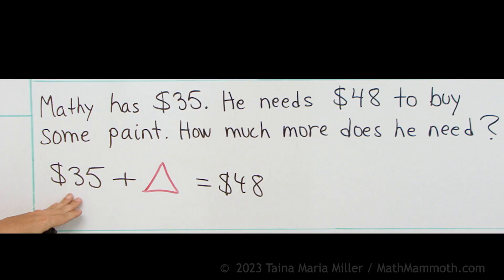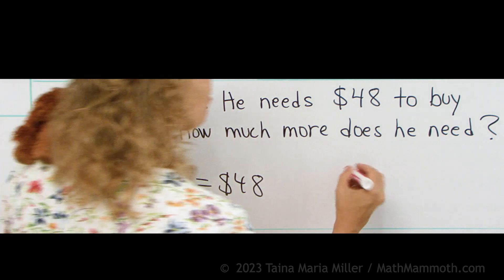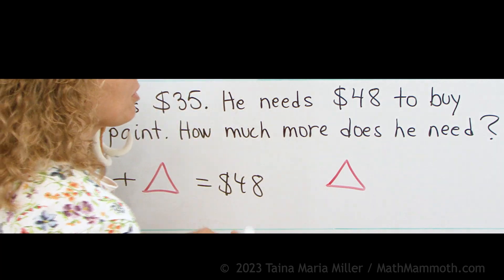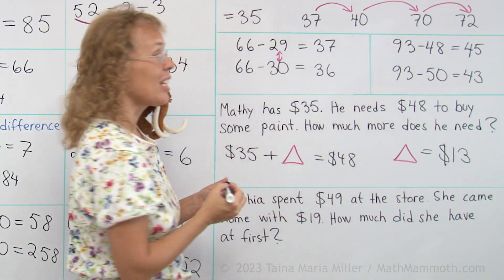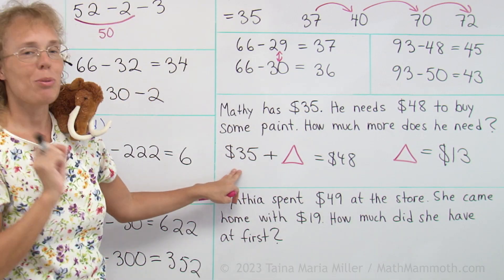And now to solve it. It's easy to solve, right? You can see $13 is missing. And then over here I will write that the triangle equals $13. I have solved my little equation. This is actually algebra in disguise.